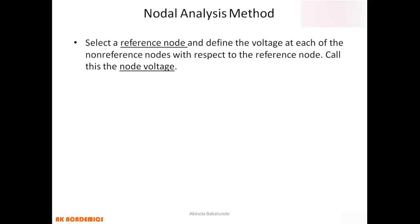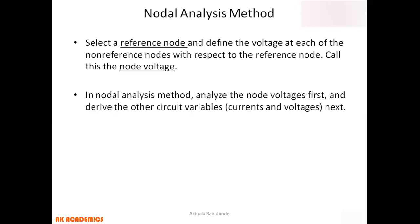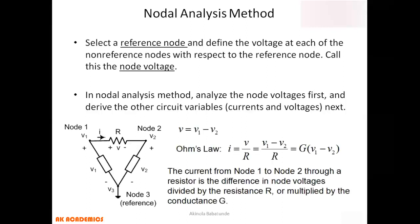When you want to analyze a circuit using the nodal analysis method, you first identify your reference node. Once you identify your reference node, all other nodes take their values from it. Select your reference node, define the voltage at each non-reference node with respect to the reference node — these are called node voltages. Analyze the node voltages first, then derive the circuit variables such as currents and voltages.